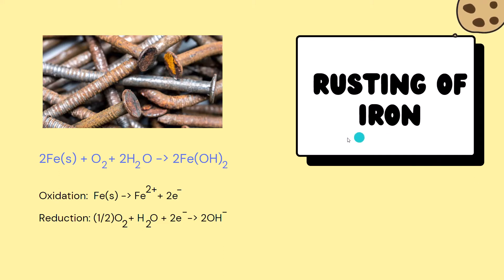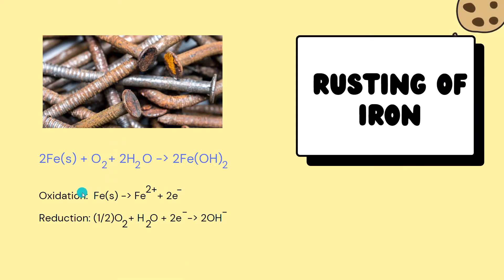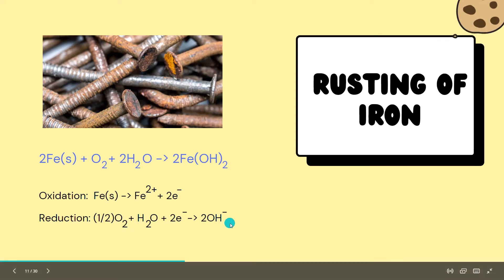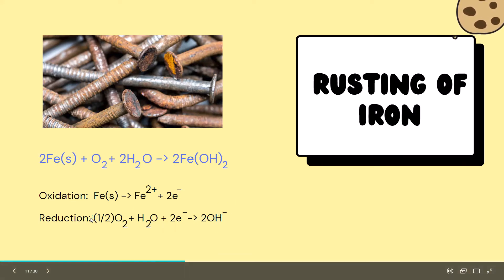This is the chemical reaction for the rusting of iron, which produces iron 2+ hydroxide. Looking at the two half reactions, we see that iron is oxidized in the redox reaction, so we call it the reducing agent. Oxygen is reduced from a charge of 0 to negative 2, so we call it the oxidizing agent.